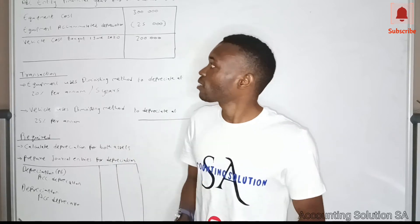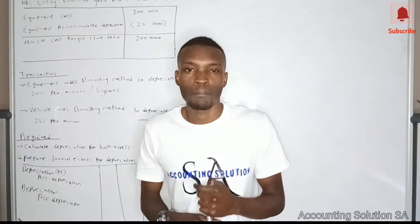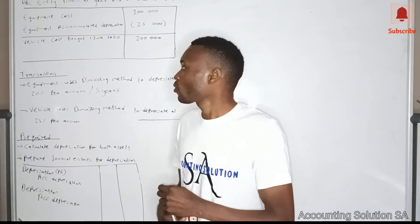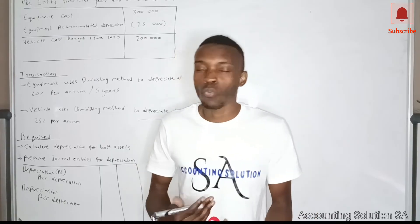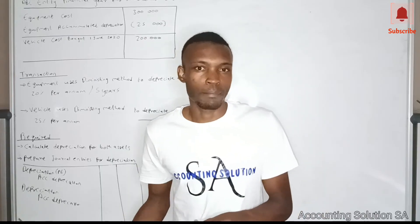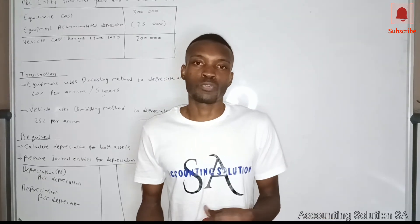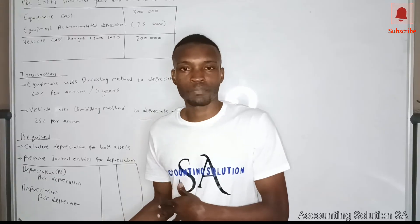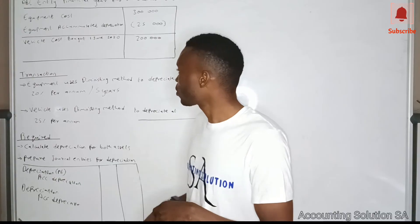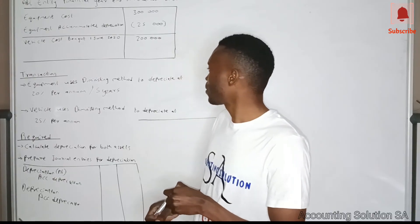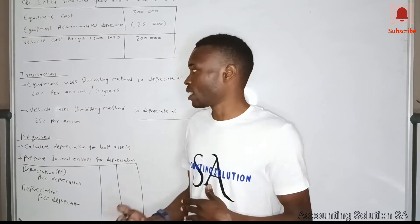The equipment cost is 300,000 and the accumulated depreciation is 25,000. A second account was bought on 1 June 2020 for 200,000. Remember, when we calculate a diminishing balance method, we don't use cost price — we have to use carrying value, which is cost minus accumulated depreciation.